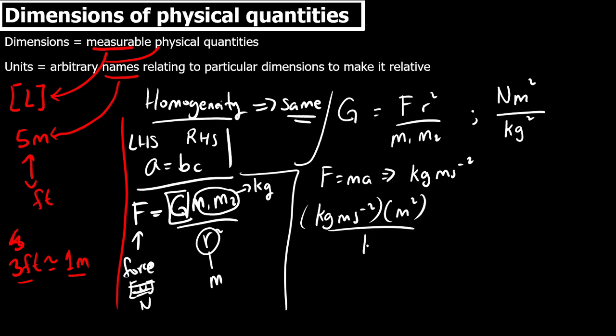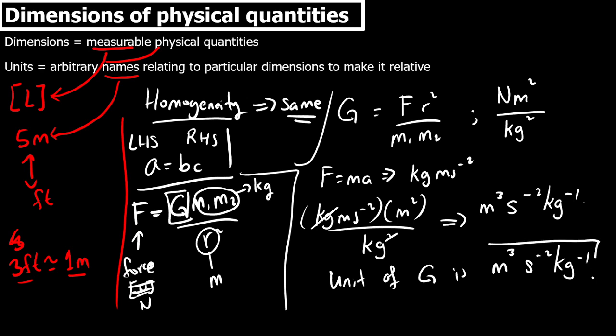s^-2, s^-2 kg^-1. So this would be the unit for G. So unit of G is m^3 s^-2 kg^-1.